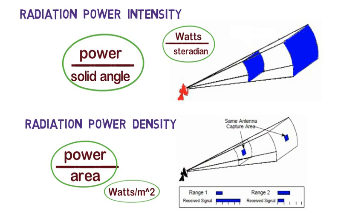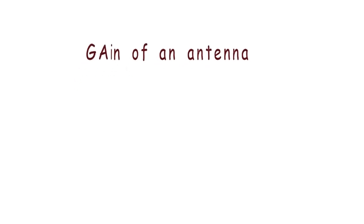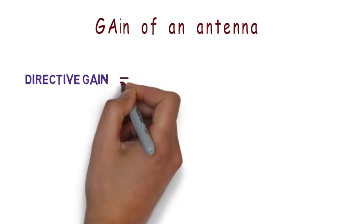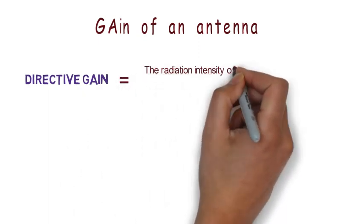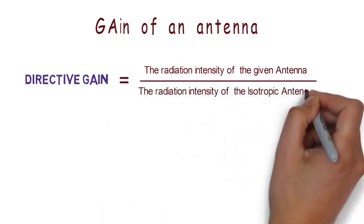Now the most important topic of antenna basics is gain of an antenna. Gain of an antenna is described by either directive gain or directivity. So let's see what is directive gain. Directive gain is the ratio of the radiation intensity of the given antenna and the radiation intensity of the isotropic antenna.